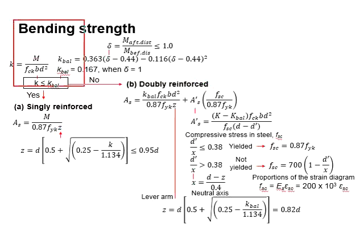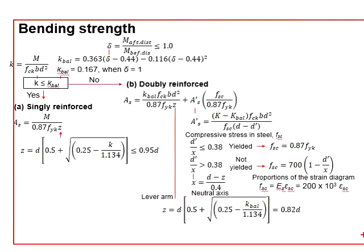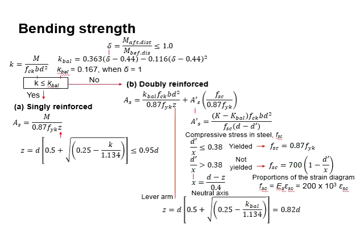The relevant equations are summarized here. Normally at the analysis stage with a given size of the member, we are still not sure whether the section is going to be singly reinforced or doubly reinforced. So normally we will start to determine the k first.